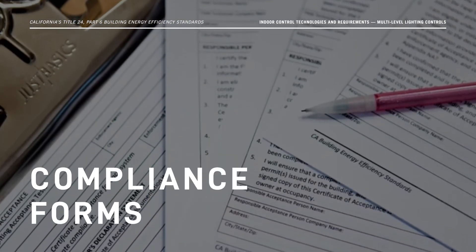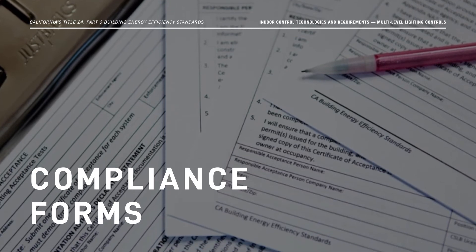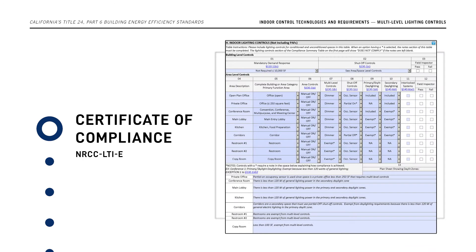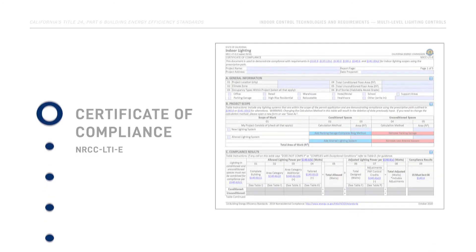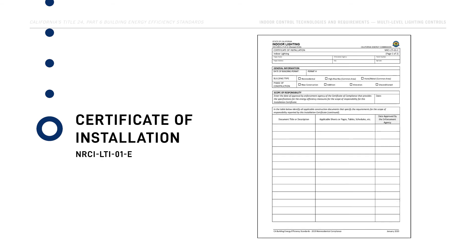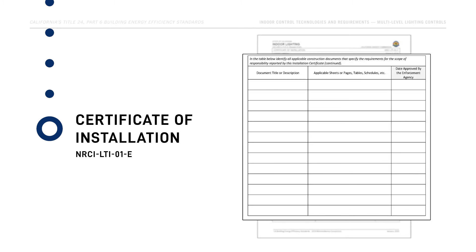Now let's discuss the necessary compliance documents for a project that includes multi-level lighting controls. During the design phase of the project, multi-level lighting controls must be documented on the Certificate of Compliance Form NRCC-LTI-E in Section H. After installation, compliance is documented on the Certificate of Installation Form NRCI-LTI-01-E. Multi-level lighting controls are not directly called out, but the form is used to show compliance with indoor lighting control requirements in general.